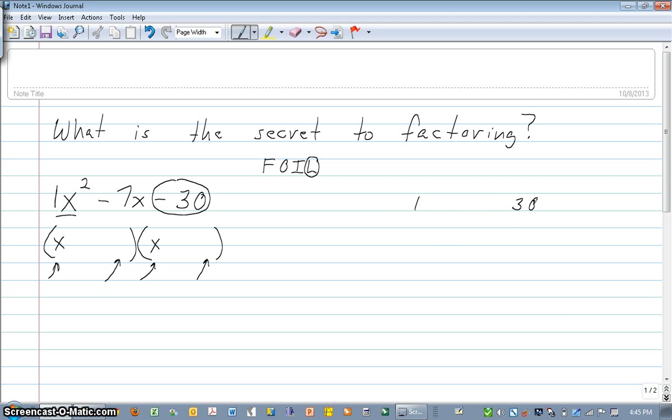We could have 1 and 30. We could have 2 and 15. We could have 3 and 10. And we could have 5 and 6. And I think that exhausts all of our options of numbers that multiply to 30.